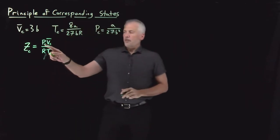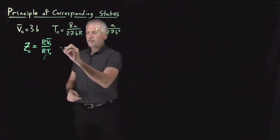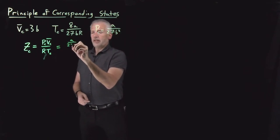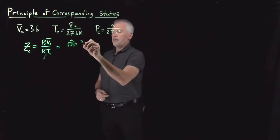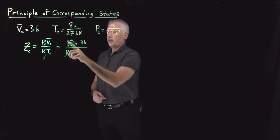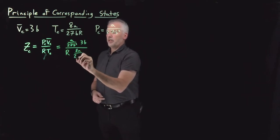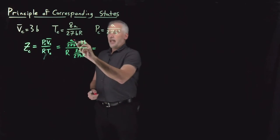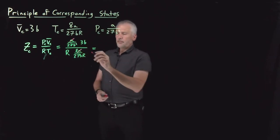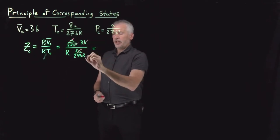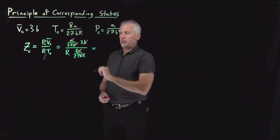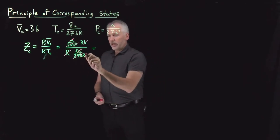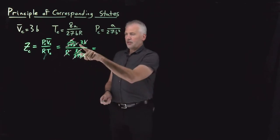If we plug in the values of the critical pressure, critical molar volume, and critical temperature using the terms we've obtained: the critical pressure is A over 27B², the critical volume is 3B, divided by R, and the critical temperature is 8A over 27BR. There's clearly going to be quite a bit of cancellation — the A's cancel, the B² cancels with the B in the numerator and denominator, the 27s cancel, and R goes away. Almost everything cancels; the only things that survive are the 3 and the 8.